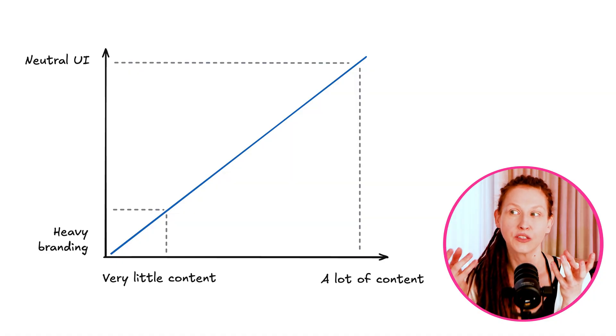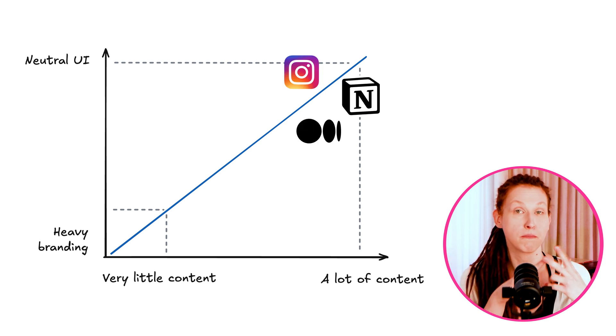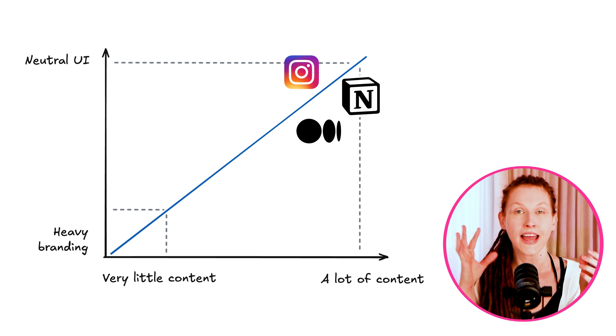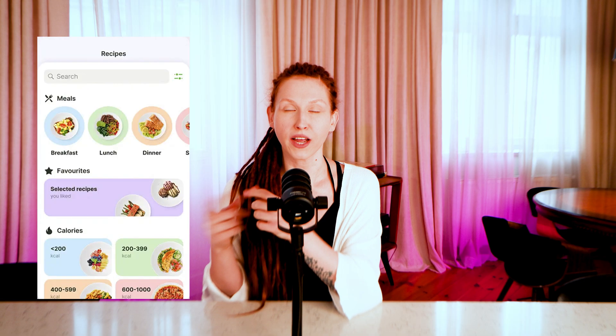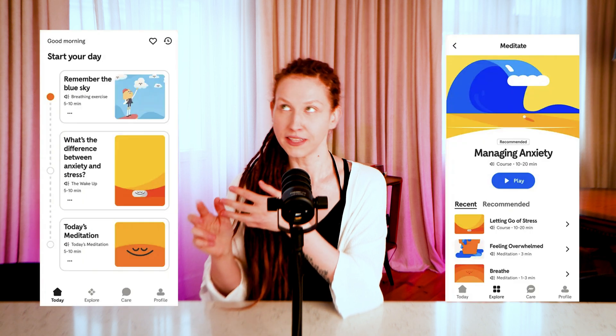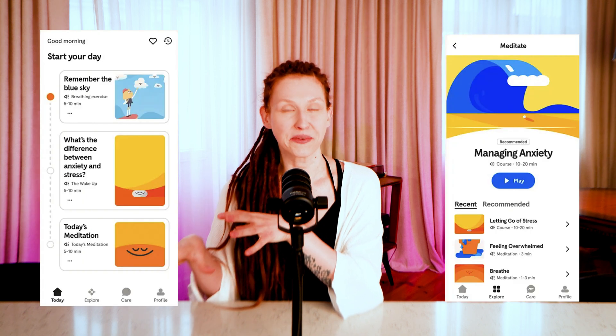I've been thinking about the relationship between how much content there is in an app and how neutral the interface should be — and I think the more content, the more neutral. Apps like Notion, Instagram, and Medium have a lot of user-generated content, and their design is super neutral, basically black and white. But apps with less content — like a food tracker, habit tracker, breathing app, or meditation app — can go a little crazier with branding, and they should, because otherwise the experience would be really boring. So there's a system for thinking about how neutral your design should be.